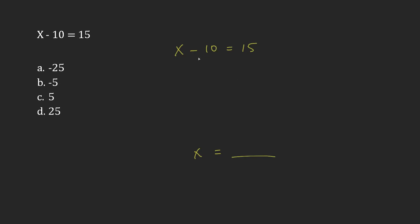So if I'm subtracting 10 from x, then what I need to do is the exact opposite operation in order to remove that. And if I do that, I have to do the same thing to this side as well, to the right hand side. So I'm going to add 10 to the 15 as well.